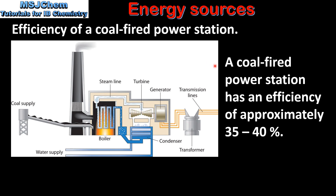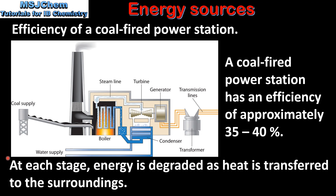A coal-fired power station has an efficiency of approximately 35 to 40%. This is because at each stage energy is degraded as heat is transferred to the surroundings.